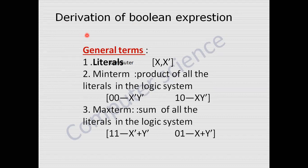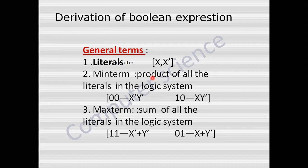Next: how to derive a Boolean expression. There are some general terms. The first one is the literal. A literal is nothing but the variables used in the logical expression, either x as it is or x complement. The second one is the min term. A logical expression contains a number of literals with OR and AND operations. The min term is the product of all the literals in the logical system.